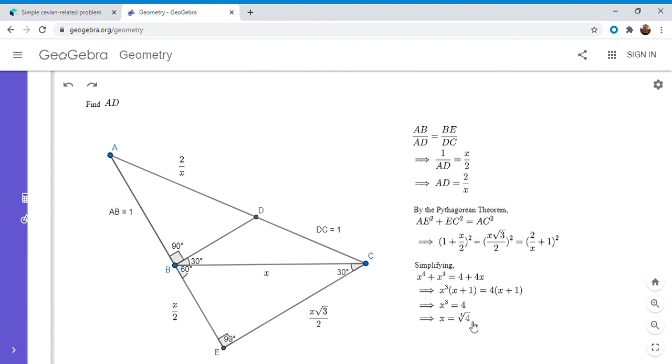And then once we know that, we can find AD. AD is simply 2 over x. Okay, so what is 2 over the cube root of 4? Well, what we can do is we can make them both cube roots, so 2 over the cube root of 4 is the same as the cube root of 8 over the cube root of 4. So AD is 2 over x, which is the cube root of 8 over the cube root of 4, and that's the cube root of 2.